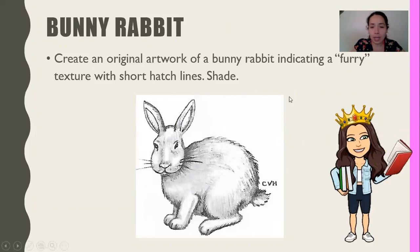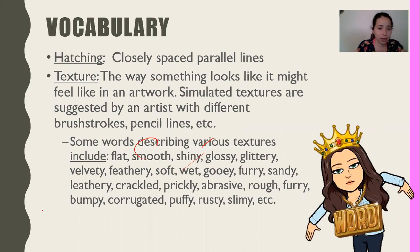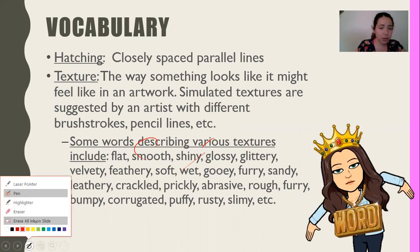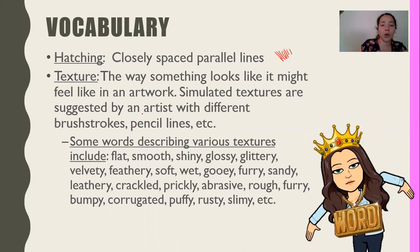Notice that this bunny doesn't just look like a bunny — it looks like a very furry bunny. Our vocabulary today: hatching — closely spaced parallel lines. That's hatching. Texture is the way something looks like it might feel in an artwork. Simulated textures are suggested by an artist with different brush strokes, pencil lines, etc. Texture helps you determine what something feels like.